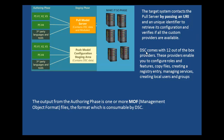Desired State Configuration comes with 12 out-of-the-box providers. These providers enable you to configure roles and features, copy files, create registry entries, manage services, and create local users and groups. These providers must be on the DSC server, and once needed, they are replicated or pushed over to the target server.